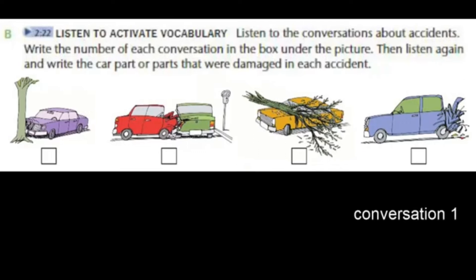Conversation 1. Oh no, what happened to your car? A tree fell on it in the storm. Look at your windshield! Yeah, I'm gonna have to get it replaced.